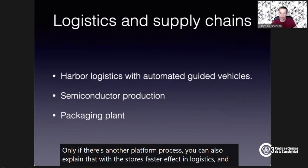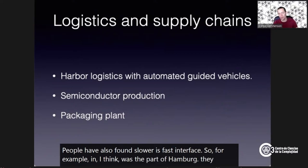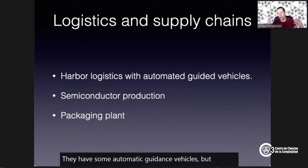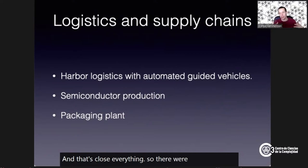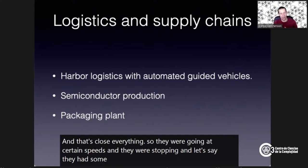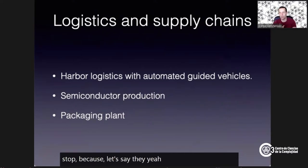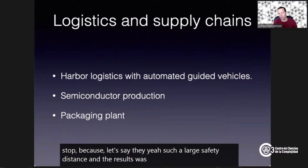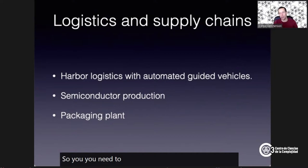In logistics and supply chains, people have also found slower-is-faster effects. For example, in the port of Hamburg, they use automatic guided vehicles. If vehicles run into each other, one needs to stop and they must decide who goes first, which slows everything. They were going at certain speeds and stopping frequently. When they lowered the vehicle speed, it became less probable they would stop because of the required safety distance, and the result was that overall throughput was faster. You need to explore the parameter space to maximize performance.